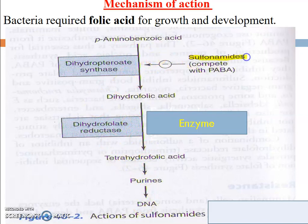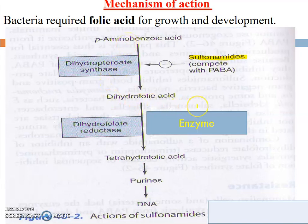In this metabolic pathway, sulfonamides bind with the dihydropteroate synthase enzyme by a competitive mechanism. Sulfonamides competitively combine with PABA (para-aminobenzoic acid) at the dihydropteroate synthase enzyme. Due to this, PABA cannot be converted into dihydrofolic acid, dihydrofolic acid cannot be converted into tetrahydrofolic acid, purines and pyrimidines cannot be synthesized, and DNA cannot be produced. This inhibits bacterial growth. This is the mechanism of sulfonamides.